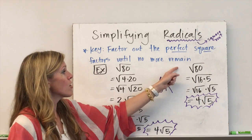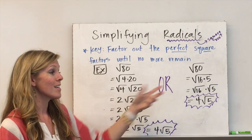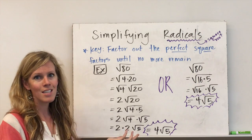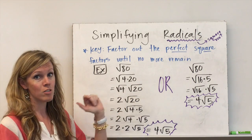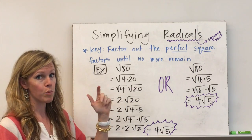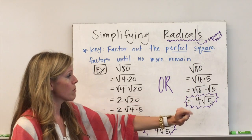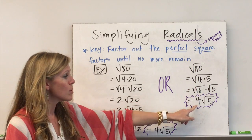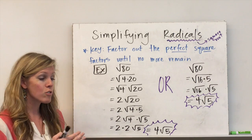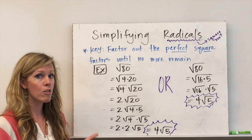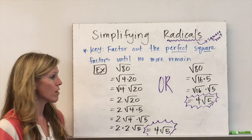You'll see I did the same thing over here, but I noticed that 16 is actually a factor of 80, and 16 is the biggest perfect square I can pull out of 80. So the square root of 16 times the square root of 5 simplifies to 4 radical 5. You'll see that square root and radical are just interchangeable words — you can use one or the other.